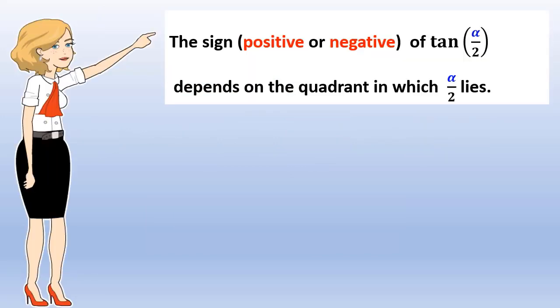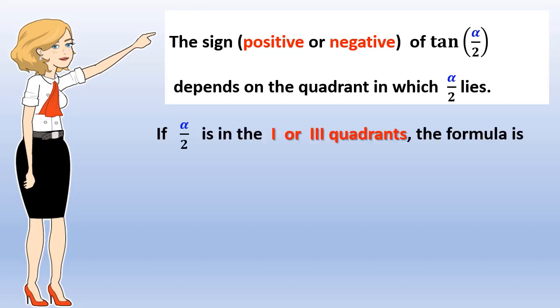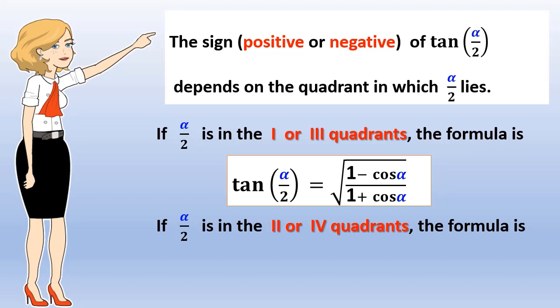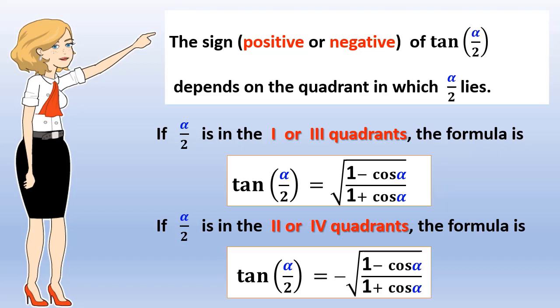The sign of tangent of alpha over 2, whether positive or negative, depends on the quadrant in which alpha over 2 lies. If alpha over 2 is in the first or third quadrant, the formula uses the positive case. If alpha over 2 is in the second or fourth quadrant, the formula uses the negative case.